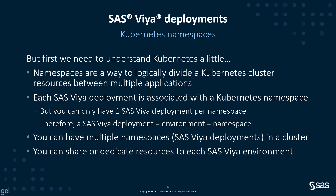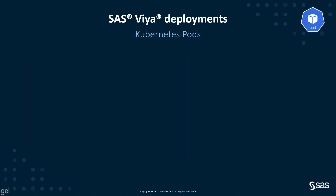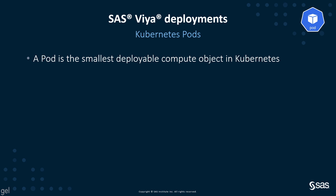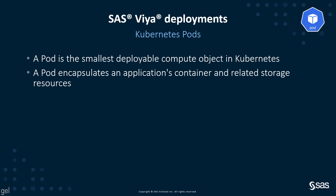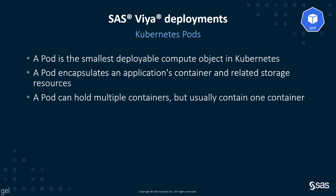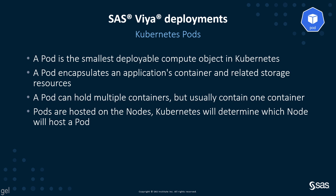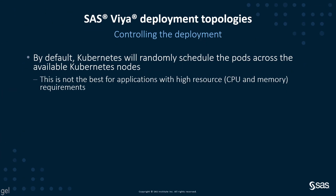You can share or dedicate resources to each of the SAS Viya environments if you're sharing a cluster. The next Kubernetes concept we need to understand is a pod. A pod is the smallest deployable compute object in Kubernetes. A pod encapsulates the application's container and the related storage resources. A pod can hold multiple containers, but usually contains a single container. Pods are hosted on the nodes, and Kubernetes will determine which node will host the pod. By default, Kubernetes will randomly schedule the pods across the available Kubernetes nodes, which is not the best for applications with high resource demands like analytics platforms.